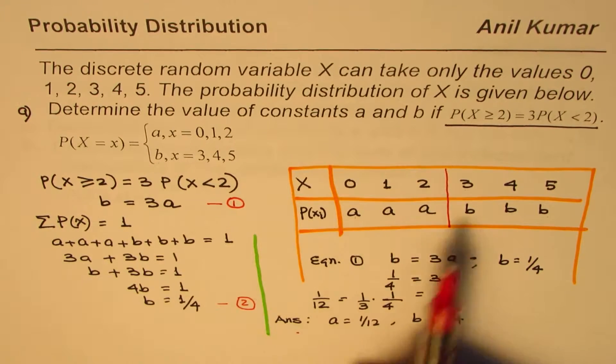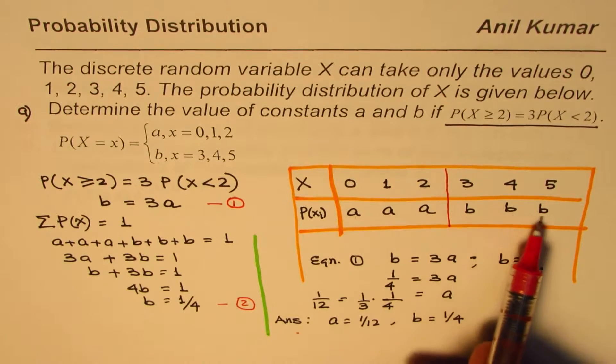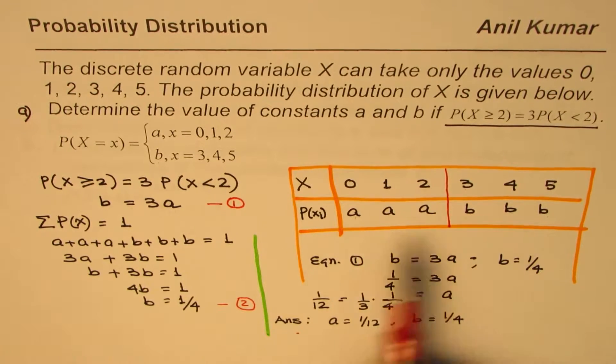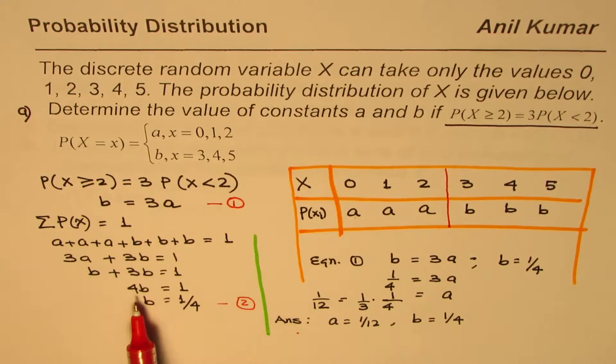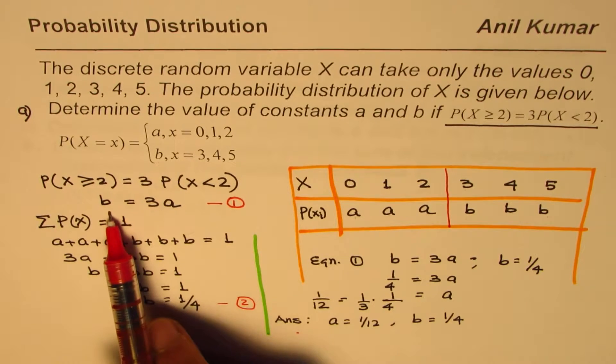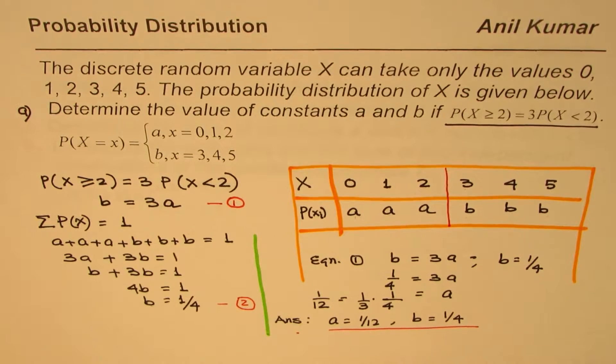So that is how these two are related. We also know sum of these should be 1, that is 3A plus 3B equals to 1. Substitute 3A as B. So 4B is 1 over 4, and putting 1 over 4 here gives us A as 1 over 12. So A is 1 over 12. So we get the values for A and B.